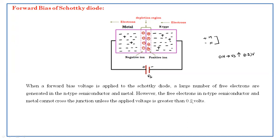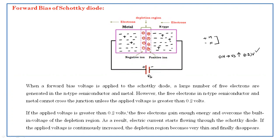Unless we give greater than 0.2 volts, it will be in the ON state condition. That is about the Schottky diode forward bias mode. In the PN junction diode, we have to give up to 0.7 volts for a silicon diode and 0.3 volts for a germanium diode. That's why the forward voltage drop of the Schottky diode is very low, at 0.2 volts only. If the applied voltage is greater than 0.2 volts, free electrons gain enough energy to overcome the built-in voltage of the depletion region, and electric current starts flowing. If voltage continuously increases, the depletion region becomes very thin and finally disappears, and current flows between the metal and the N-type.